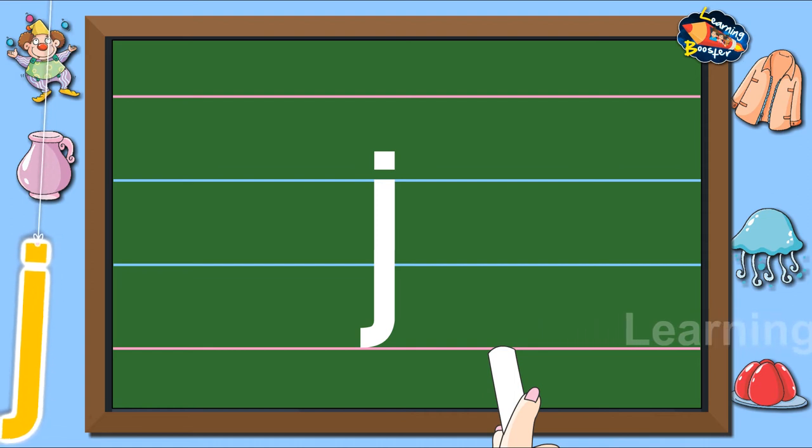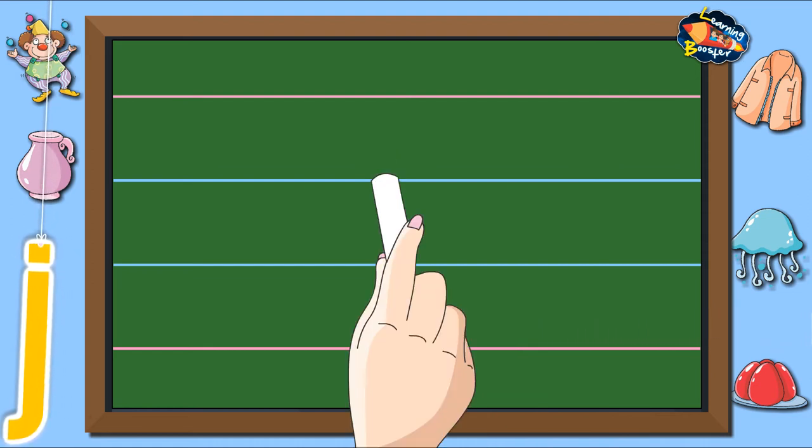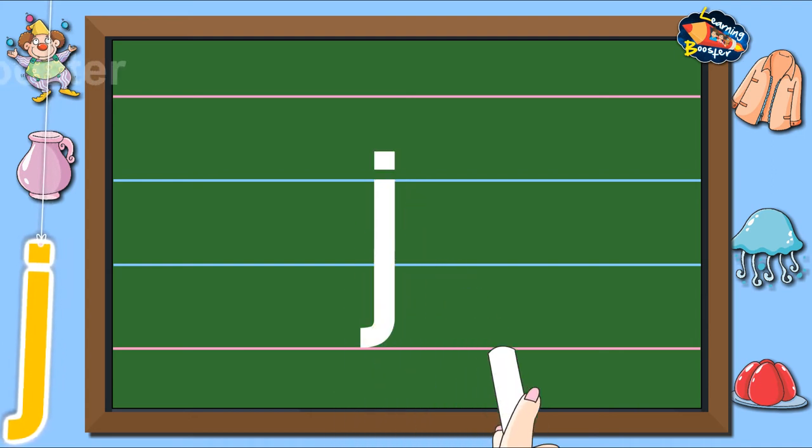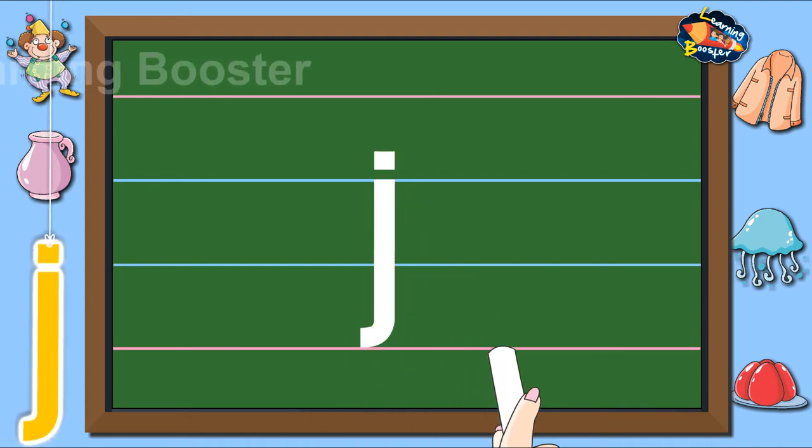Let us look at it once more. One standing line down with a backward curl and a dot on top makes letter J.